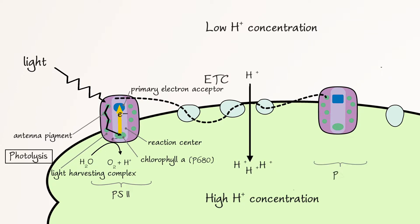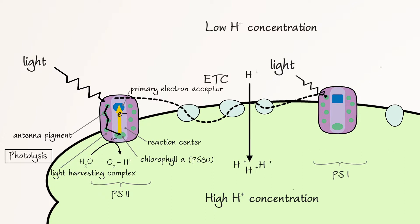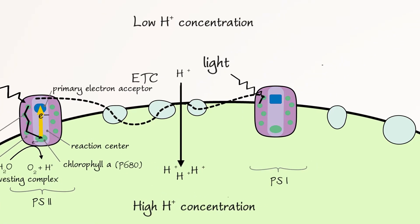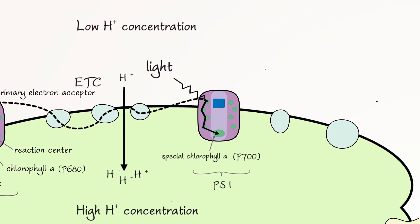The electron eventually reaches photosystem I. Light strikes the antenna pigments of the light-harvesting complex of photosystem I, and energy is funneled to a pair of special chlorophyll A molecules in the reaction center. The chlorophyll A molecules in photosystem I are also known as P700 because they absorb light of wavelength 700 nm best. The funneled energy excites the electron in the chlorophyll A molecule, and the excited electron, now in its higher energy state, is transferred to the primary electron acceptor. Electrons are replenished by a continued influx from photosystem II; photolysis does not occur at photosystem I.